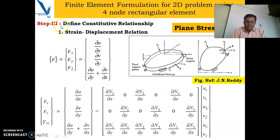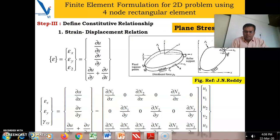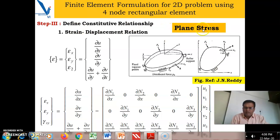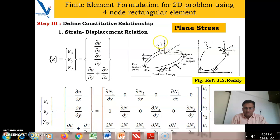The third step is to define the constitutive relations: the strain-displacement relation and the stress-strain relation. We have selected the problem type as a plane stress problem. The strain-displacement relations give us epsilon_x, epsilon_y, and gamma_xy equal to ∂u/∂x, ∂u/∂y, and ∂u/∂y + ∂v/∂x respectively — relating strain with respect to displacement. Load is applied in the x-y plane with no load in the z direction. If U is a function of x and y we can differentiate and obtain the strain-displacement matrix.